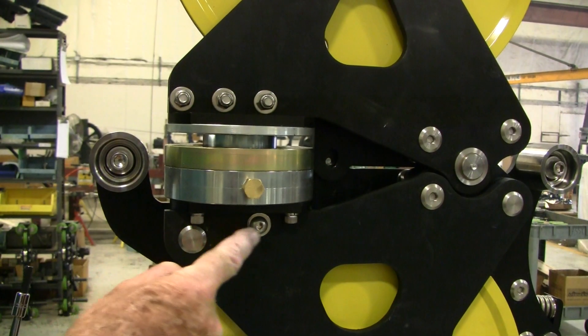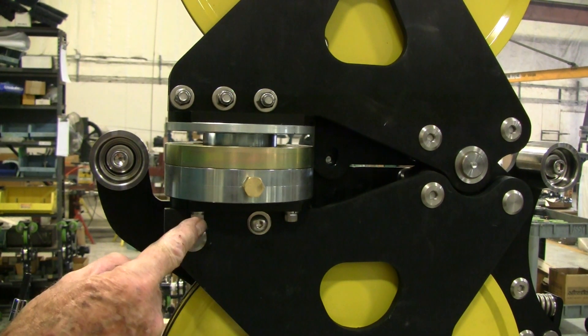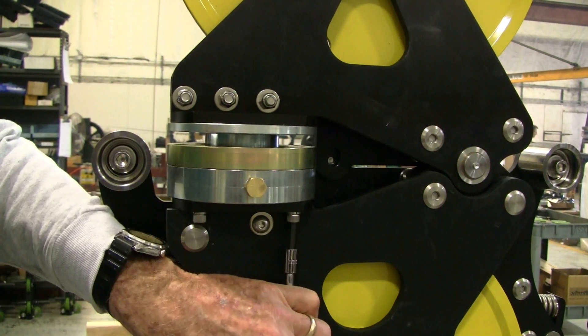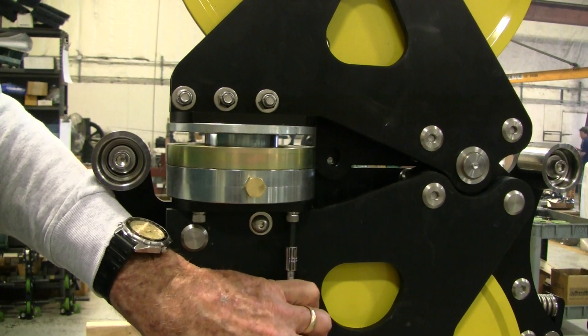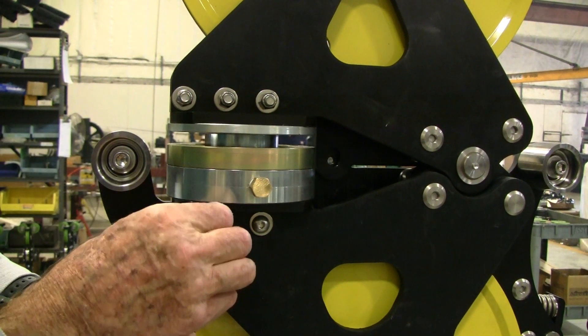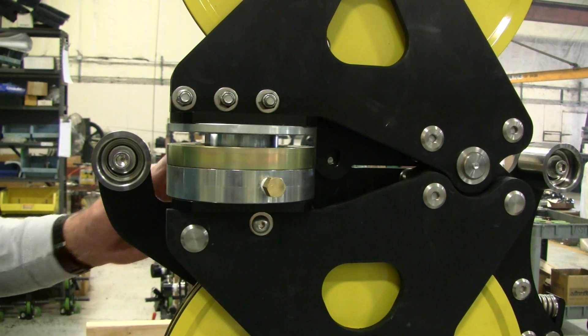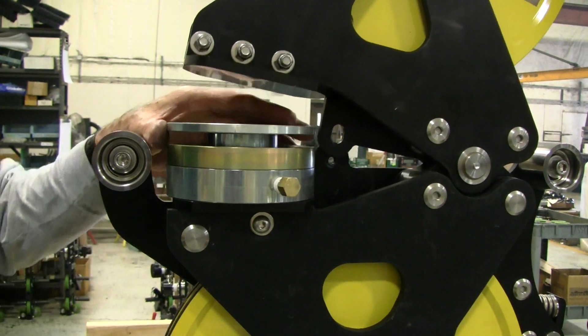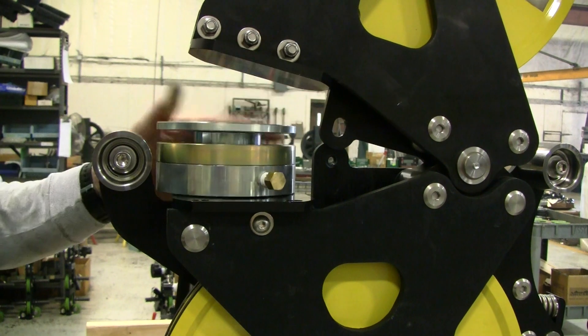Next, remove the two screws that go through the mounting plate and screw into the load cell body. The load cell now moves freely. Now swing the frame away and slide the load cell out.